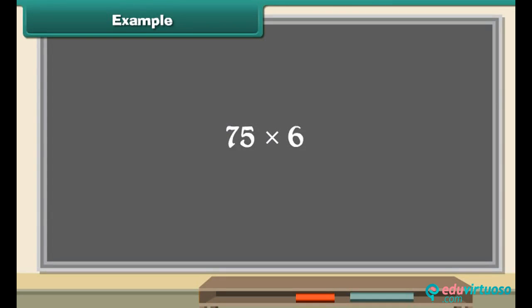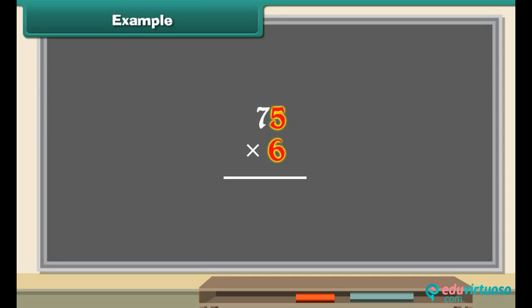Example: multiply 75 by 6. Place the numbers one below another. Multiply 5 by 6: 5 sixes are 30 — place 0 below 6 and carry 3 above 7. Multiply 7 by 6: 7 sixes are 42. Add 42 and 3, and write 45 below 7. The answer is 450.